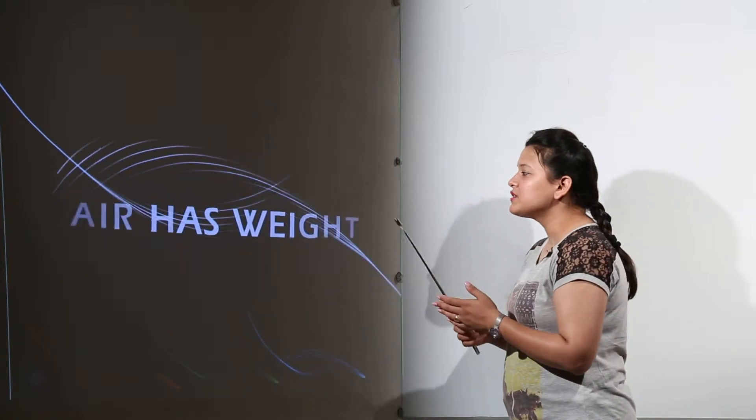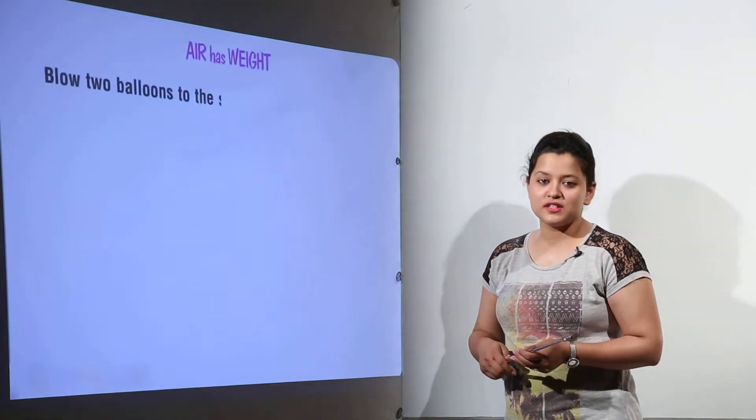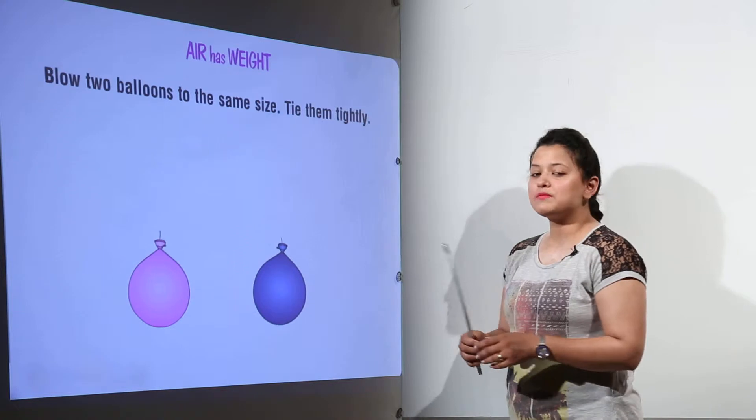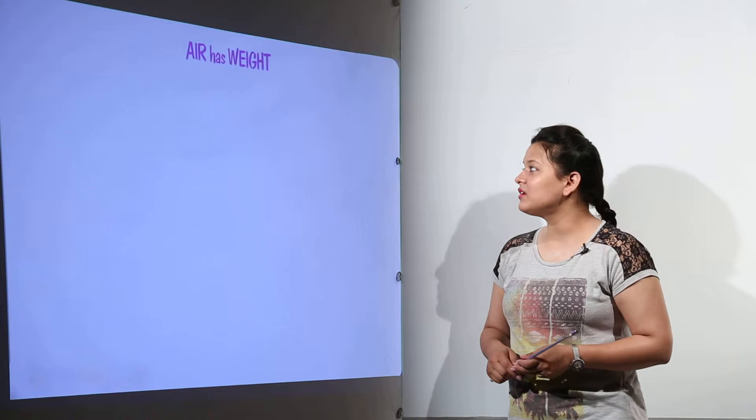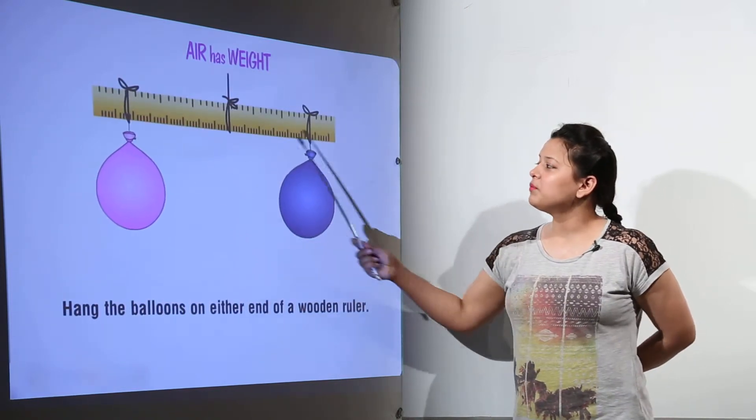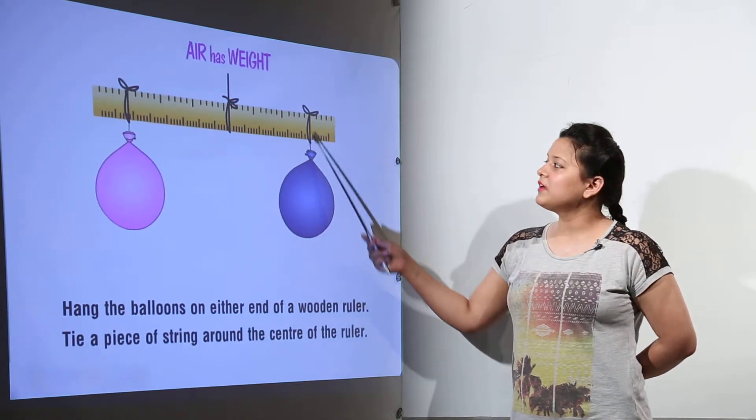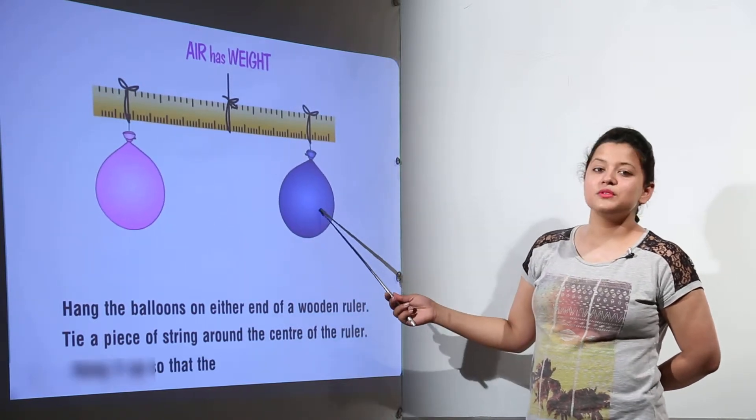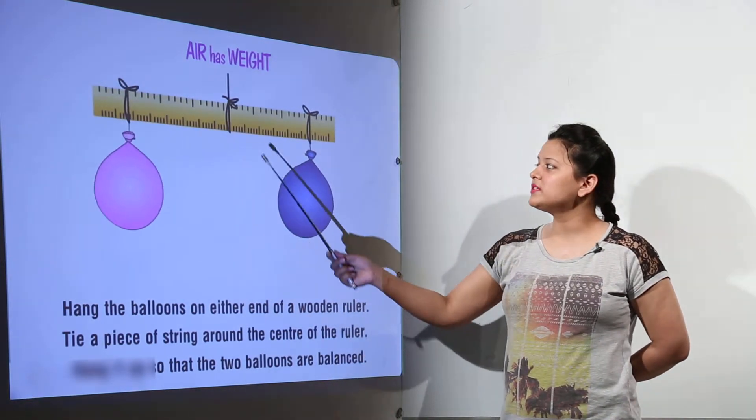Now, air has weight. How do we conclude this? For this we take two balloons of the exact same size and tie them tightly so that air does not escape. We tie both balloons on either end of a wooden ruler and tie the ruler from the middle. Since both balloons have exactly the same weight, there is no movement in the wooden ruler.